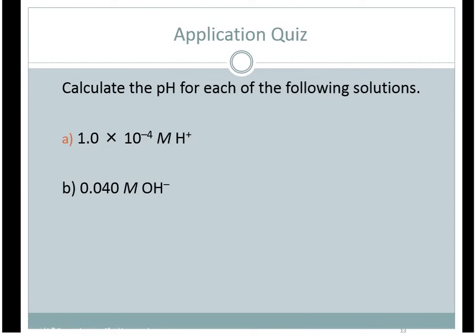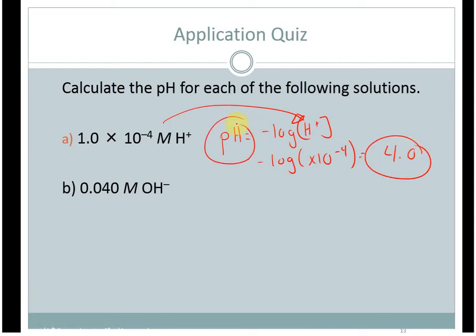So, let's calculate the pH for these solutions. Here we have 1 times 10 to the minus 4 molar H plus concentration. Pause this and please try it on your own first and then hit play. pH is equal to the negative log of the H plus. So, we're just going to plug this value in here and say pH is equal to the negative log of 1 times 10 to the minus 4, which is right at 4. We could also take this a step further. If we know pH and we know that pH plus pOH is equal to 14. 4 plus pOH equals 14. Subtract 4 from both sides. pOH is equal to 10.